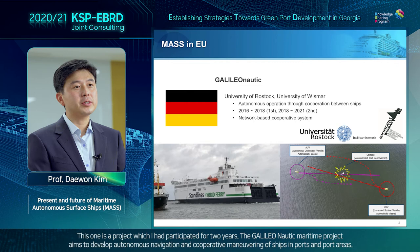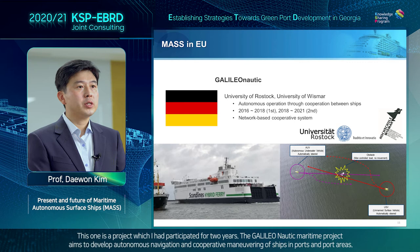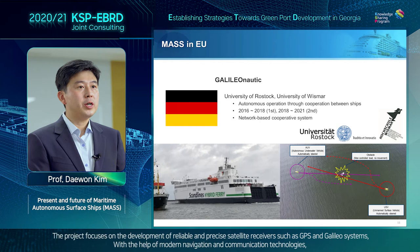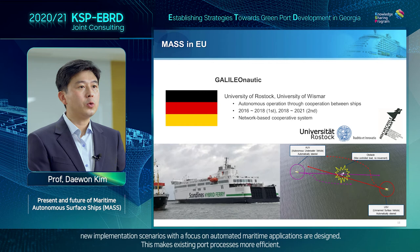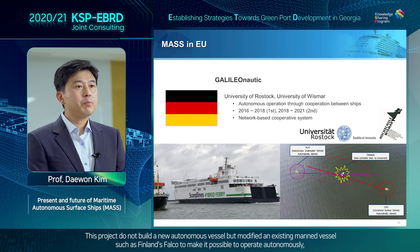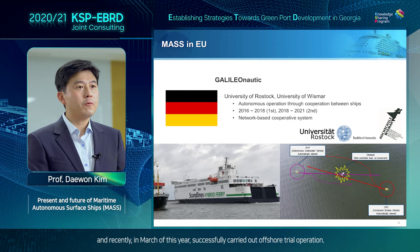This is a project which I had participated in for two years. The Galileo Nautic Maritime Project aims to develop autonomous navigation and cooperative maneuvering of ships in ports and port areas. The project focuses on the development of reliable and precise satellite receivers such as GPS and Galileo systems. With the help of modern navigation and communication technologies, new implementation scenarios with a focus on automated maritime applications are designed, making existing port processes more efficient. This project does not build a new autonomous vessel, but modifies an existing vessel such as the Falco in Finland to make it possible to operate autonomously, and recently in March of this year successfully carried out an offshore trial operation.